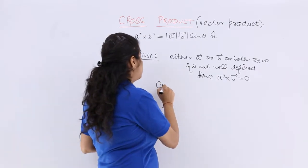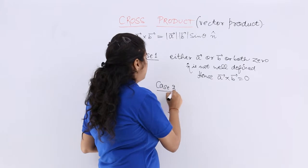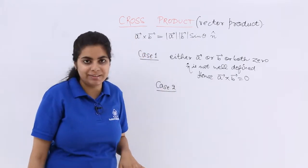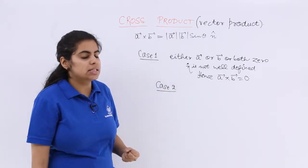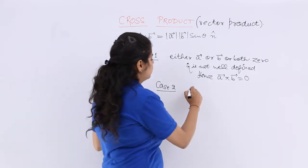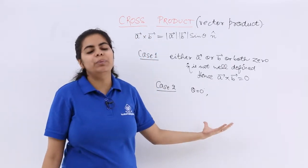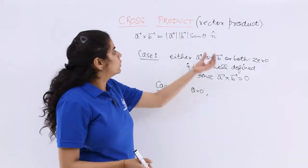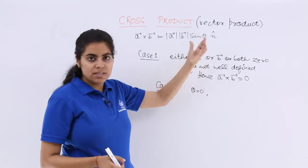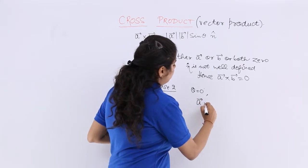The next case, different cases can be formed but we will be taking only two important cases. The next case is when theta is 0 degrees. That means the angle between the vectors is 0 degrees. So theta is 0, sin 0 is 0, so definitely A cross B is 0.